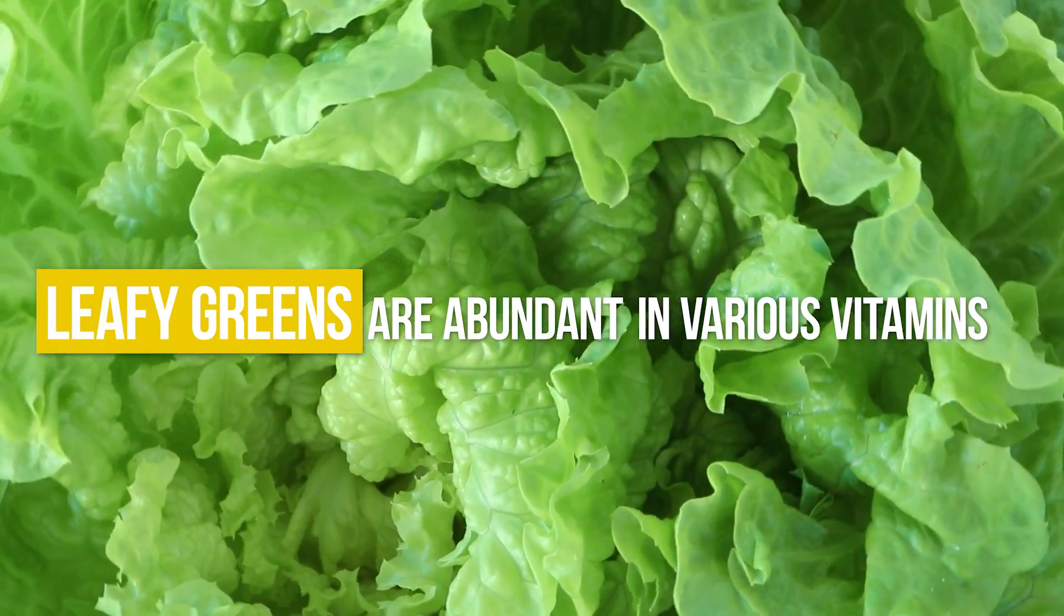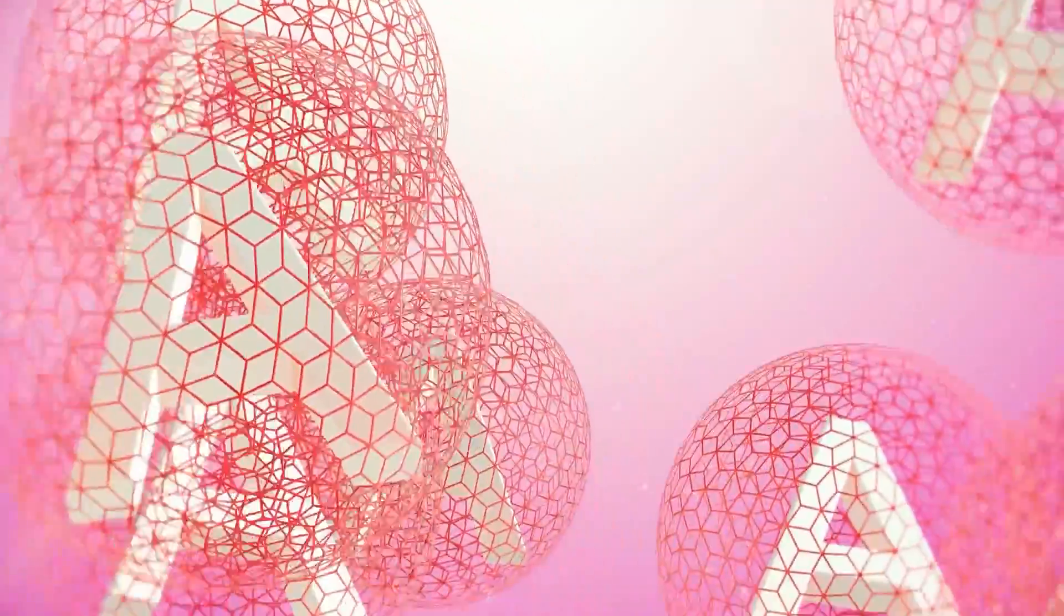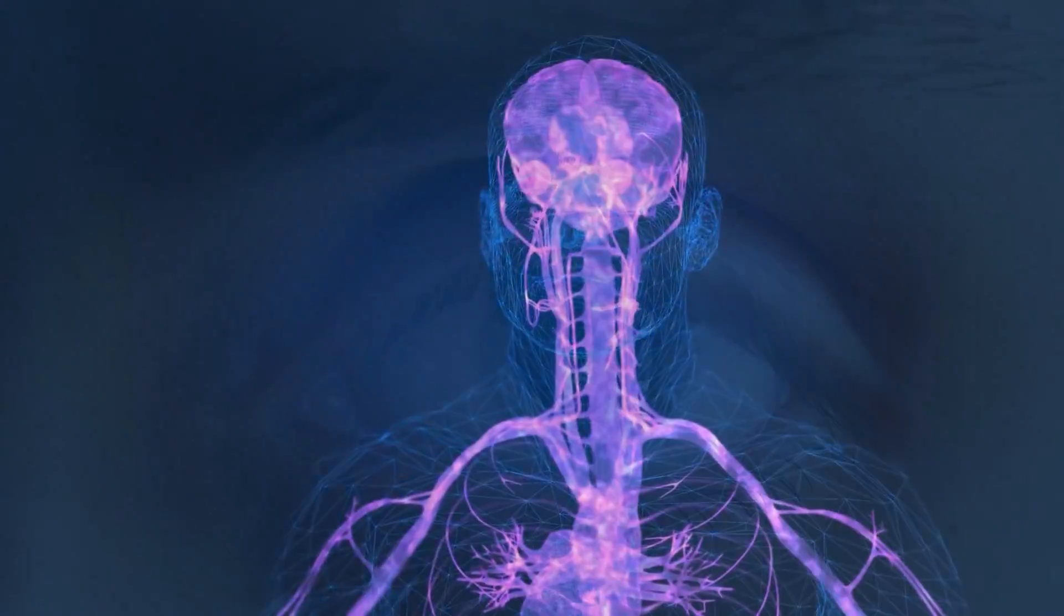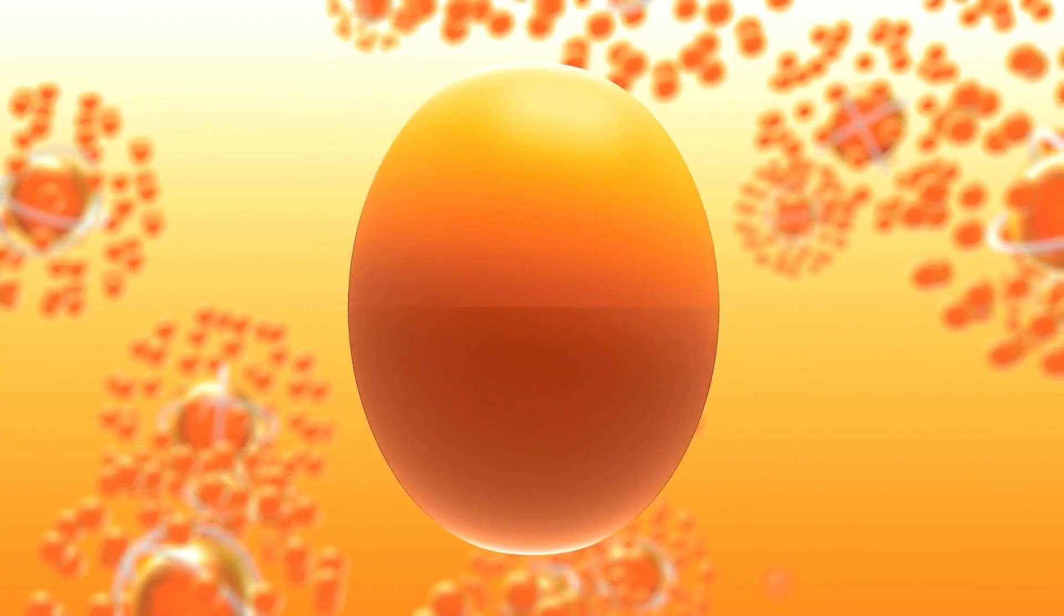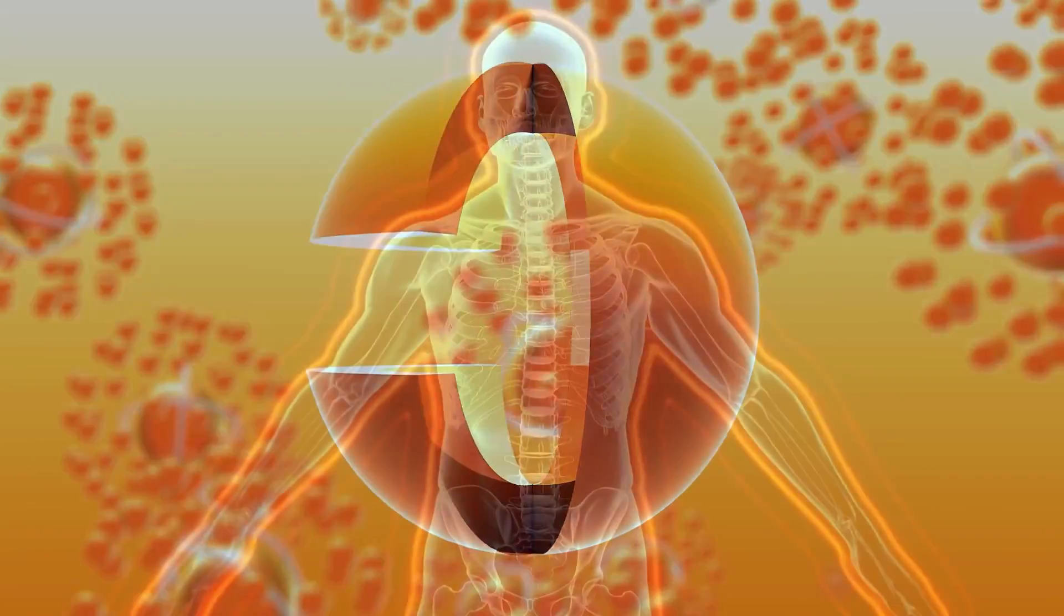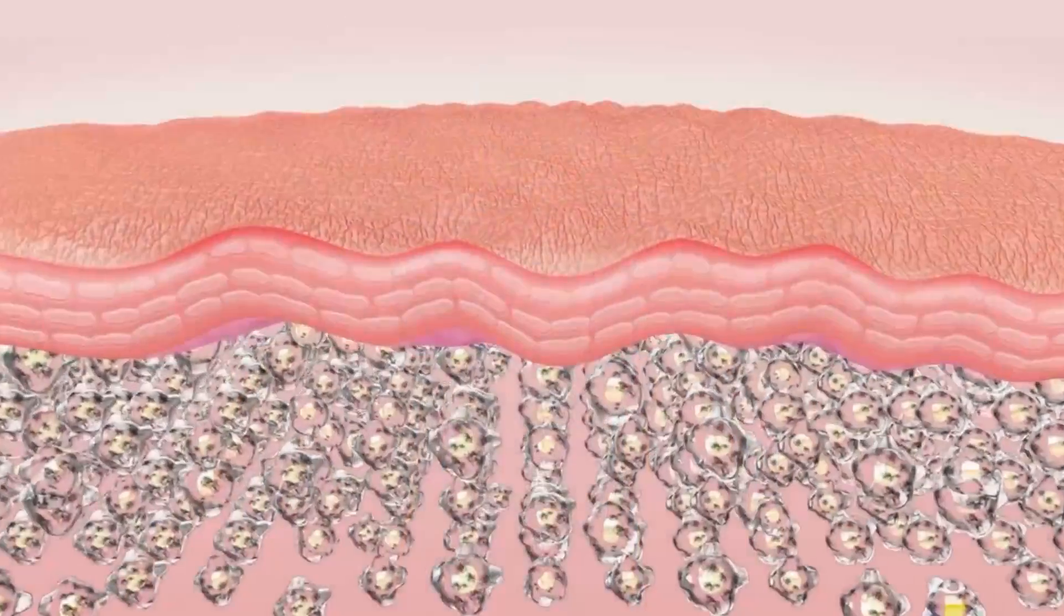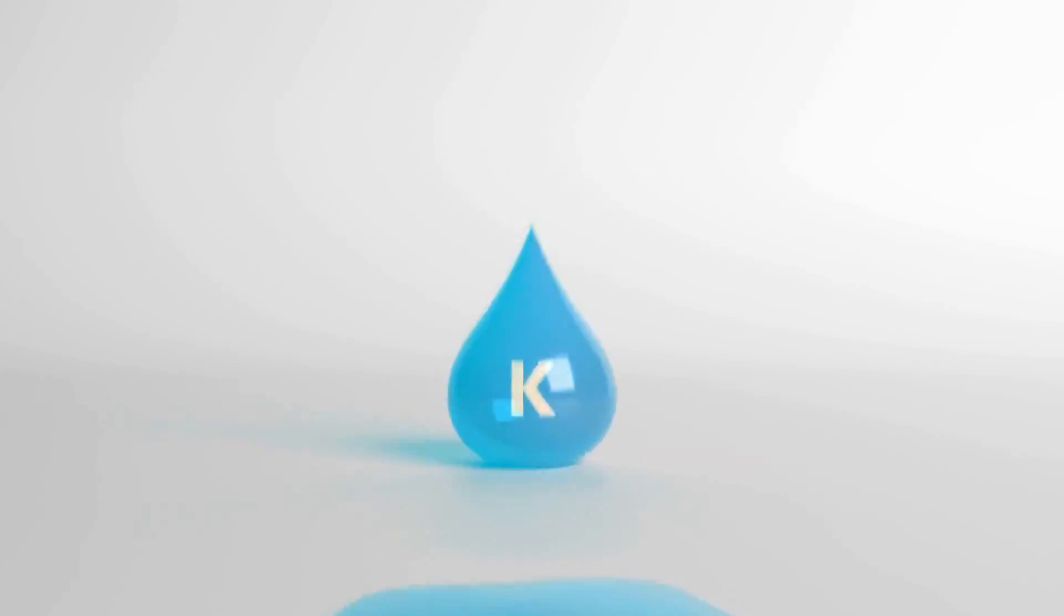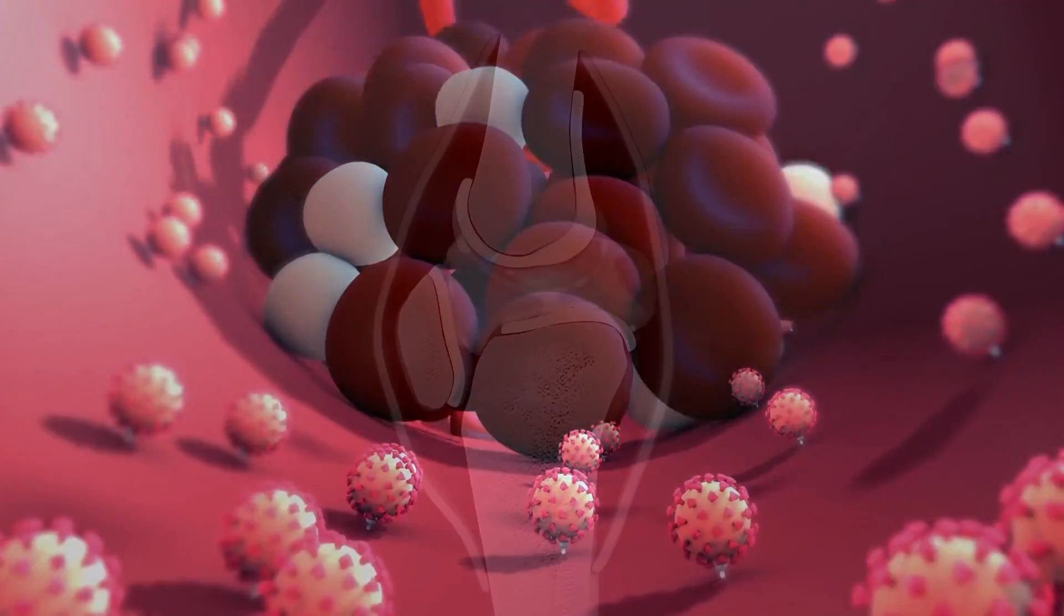Leafy greens are abundant in various vitamins, including vitamin A, vitamin C, and vitamin K. Vitamin A is essential for healthy vision, a robust immune system, and skin health. Vitamin C acts as a powerful antioxidant, boosting the immune system and supporting collagen production for healthy skin and joint health. Vitamin K is crucial for blood clotting and bone health.